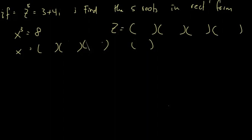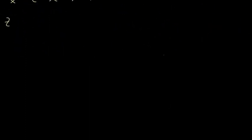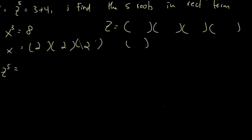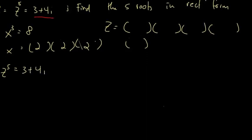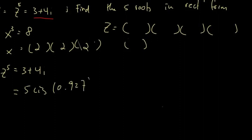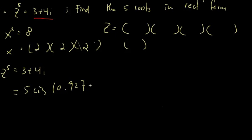Coming back to the analogy, x equals 2, 2, and 2. Our first step is to convert 3 plus 4i into polar form: 3 plus 4i equals 5 cis(0.927). And remember our equivalent solution — that will be plus 2kπ.